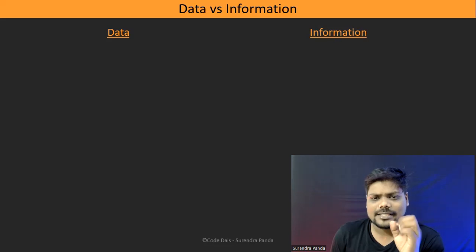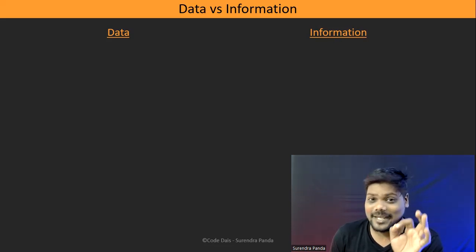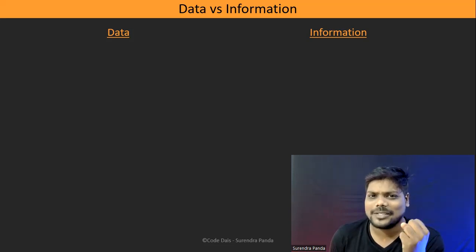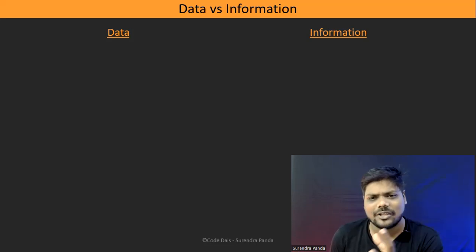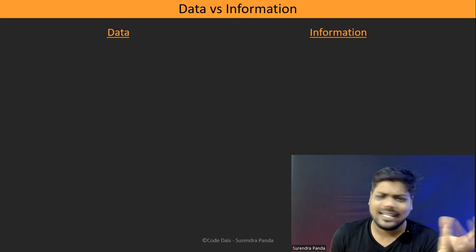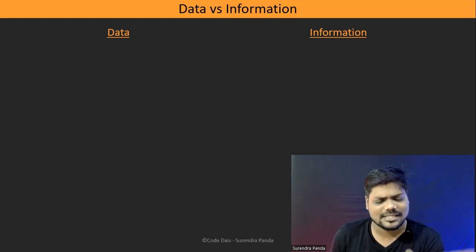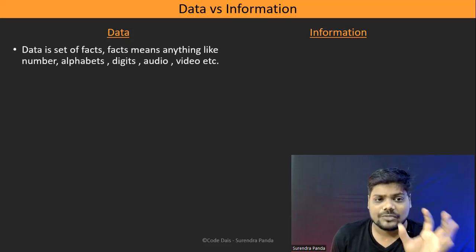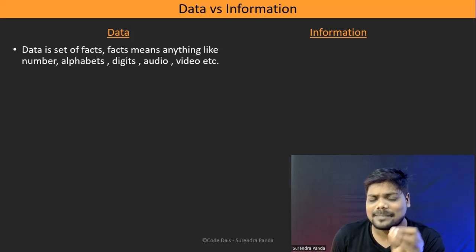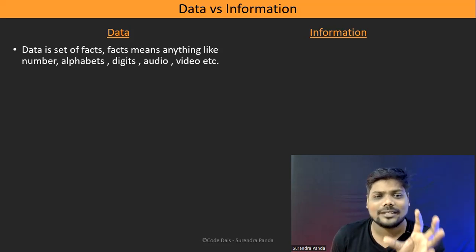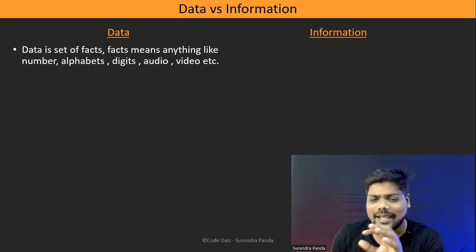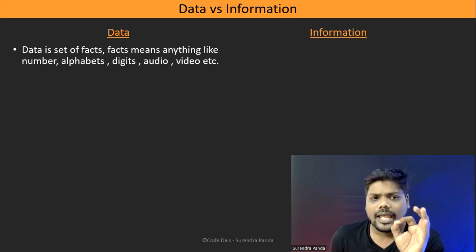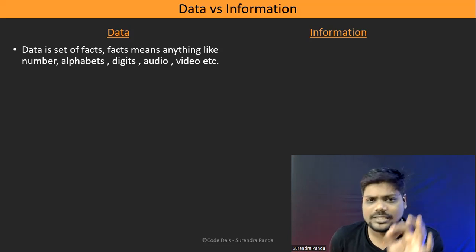The first thing is: data means anything and everything. Data is a set of facts. Facts means it can be a number, can be an image, can be a movie, can be audio, can be an alphabet, can be symbols — whatever it may be, those are considered as data. So data is nothing but a set of facts — things like numbers, alphabets, digits, audio, video, etc.